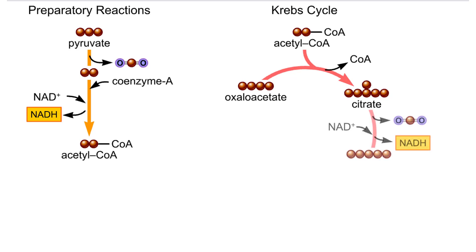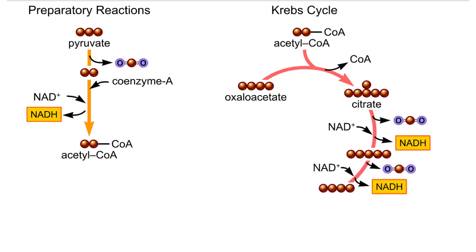Next, another carbon atom is released as carbon dioxide and NADH forms as NAD picks up hydrogen and electrons. Another carbon dioxide is released and another NADH forms. At this point, three carbon atoms have been released as carbon dioxide. This balances out the three carbon atoms that entered the mitochondrion as pyruvate.